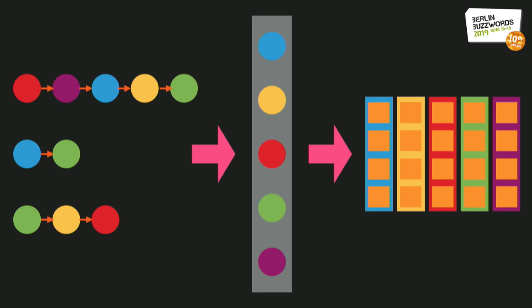To obtain a representation of the API sequence for each code snippet, we pass these vectors in order through a recurrent neural network—a different one from the text RNN but with the same architecture—collect the generated hidden vectors, and aggregate them via max pooling. However, there's some flexibility in the ordering and choice of API calls, so this isn't completely sufficient to represent the intent behind a code snippet in a general way.